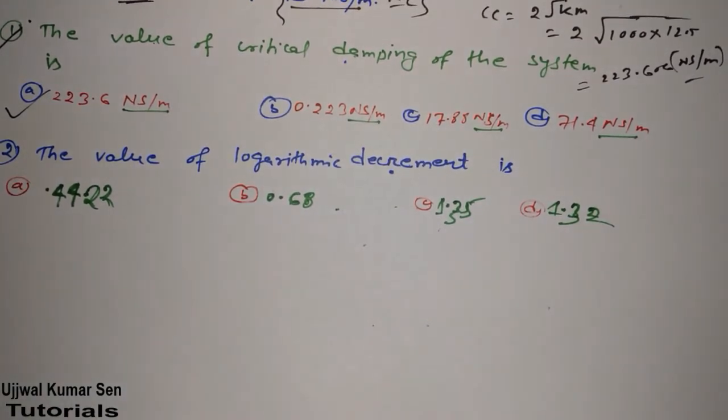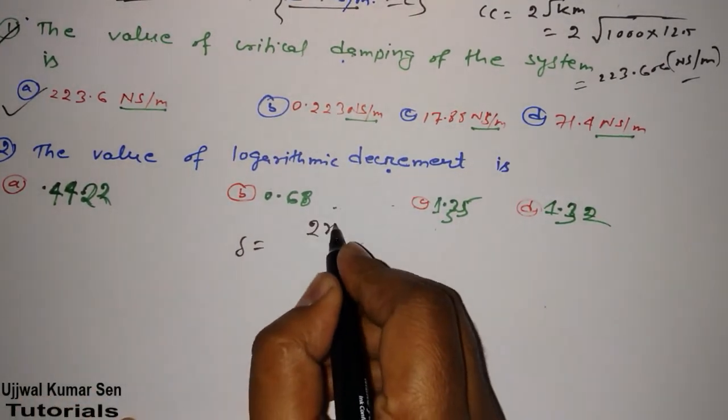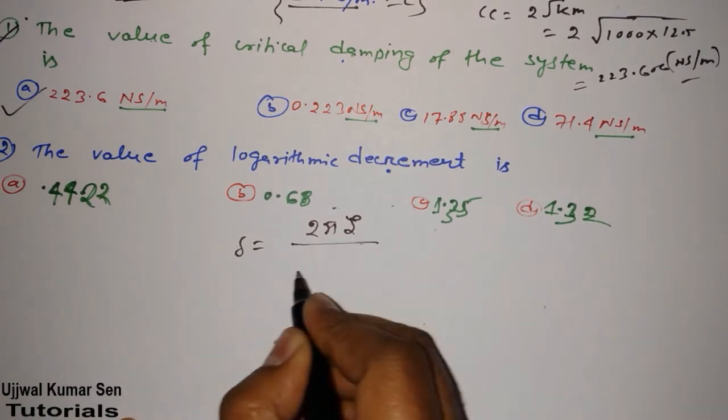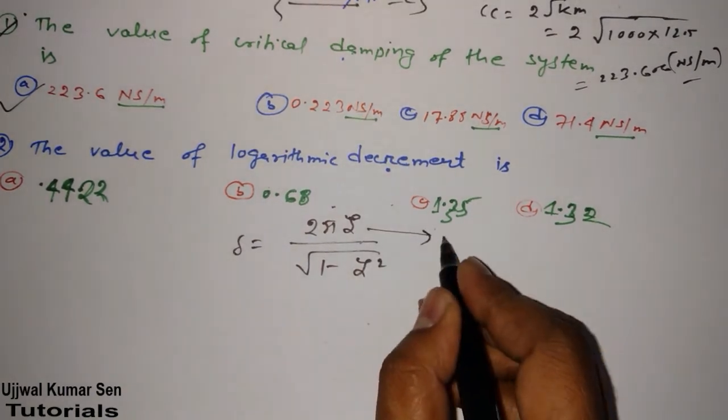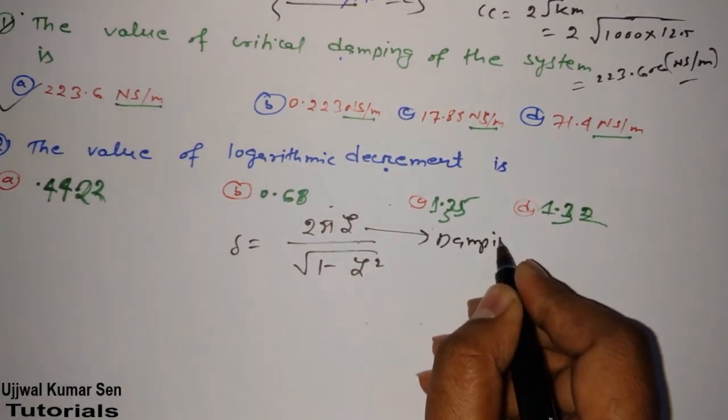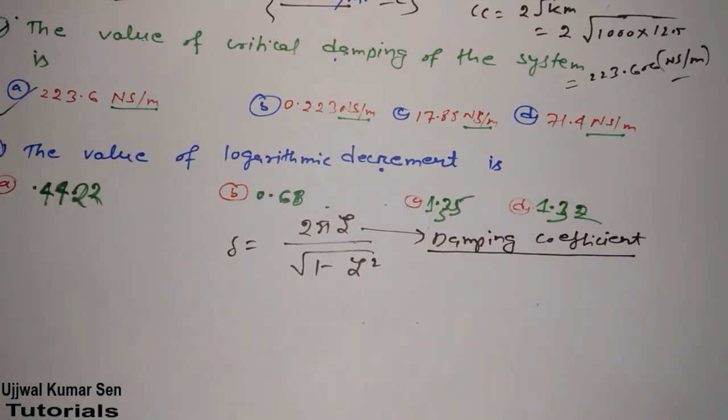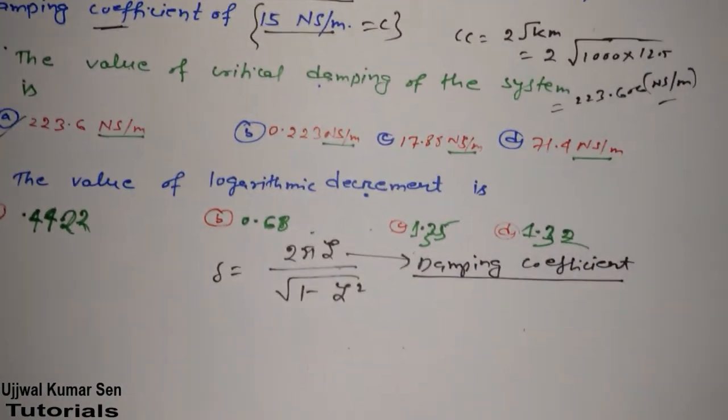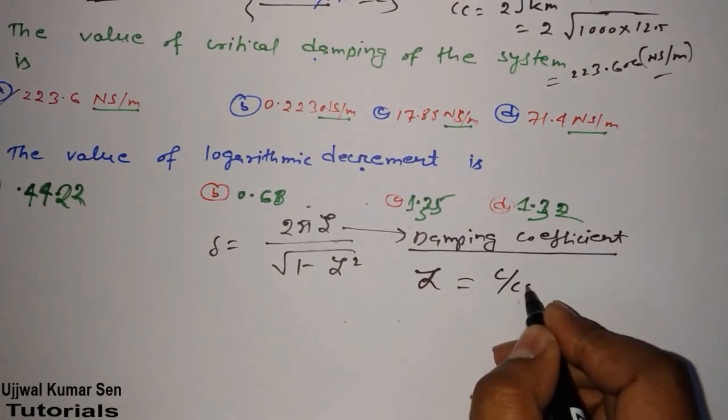In this question, they have asked find out delta. That is logarithmic decrement. We know delta is δ = 2πζ/√(1-ζ²). We know this. But what is zeta? Damping coefficient. But thing is that we don't know what is the value of zeta. It's not given in this question.